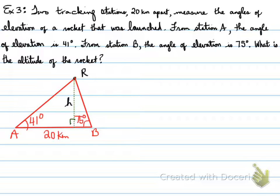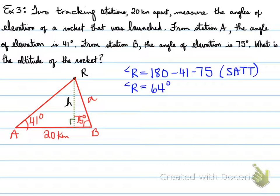Sine law means, that's right, we're going to look at it. Angle R. We need angle R first to be able to use sine law. And using SATT, we find out that angle R is equal to 64 degrees. So fill it in and we have 64 degrees right there. How does that help us?